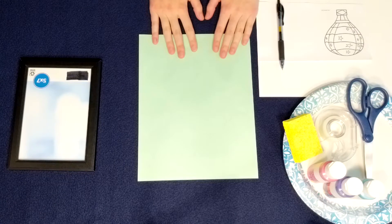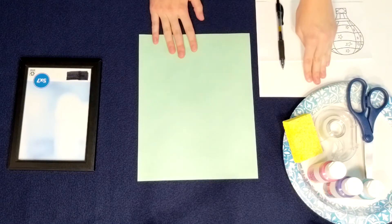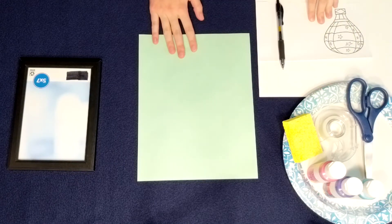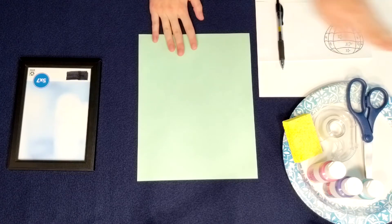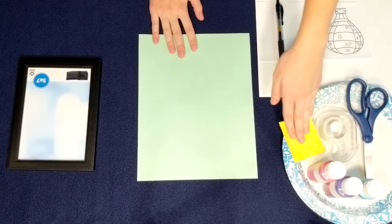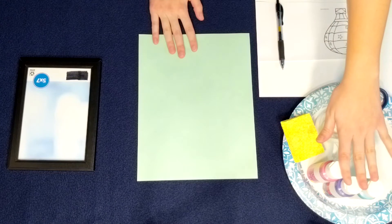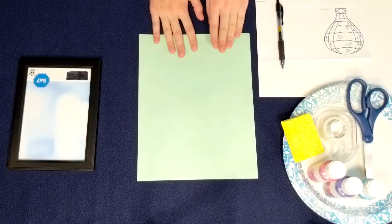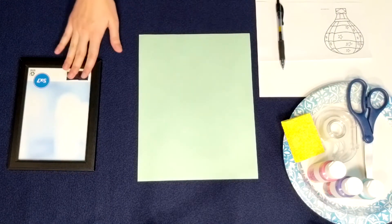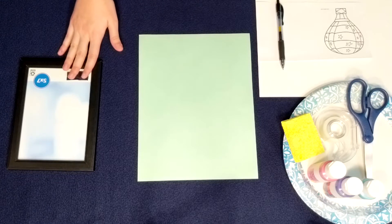The materials you will need for this craft are a piece of cardstock, a picture, a pen, a pair of scissors, tape, a sponge, three paints, a paper plate, a piece of scrap paper, and a picture frame. I'm using a 5x7.